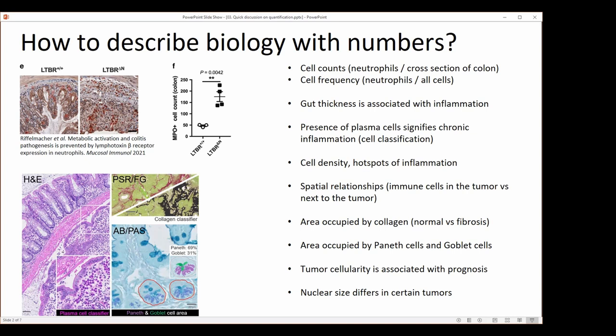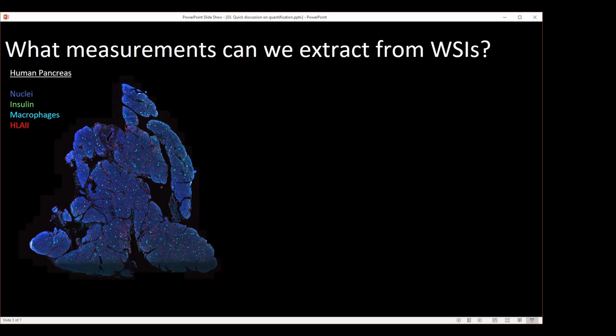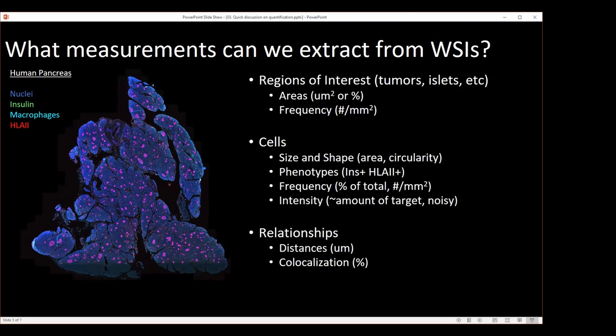Just to get you thinking about this, what measurements can we extract from whole slide images? In this picture on the left, it's a whole slide image of a human pancreas stained with insulin, HLA-2, and CD163 for macrophages. From this image, we can look at regions of interest such as islets or tumors, and from these regions of interest, get areas in either microns squared or percentage of the whole tissue, or frequency such as the number of islets per millimeter squared of tissue.